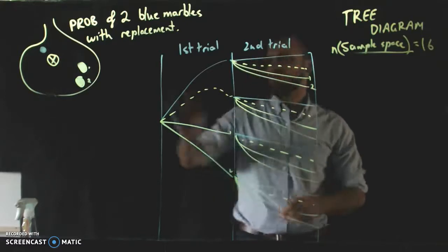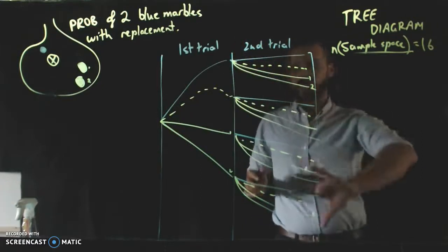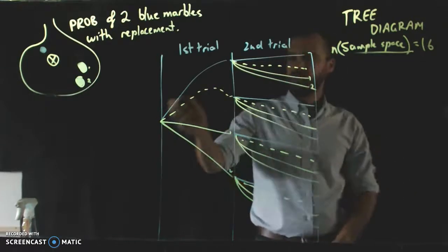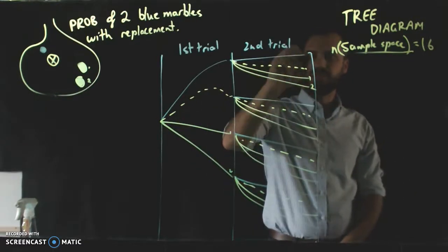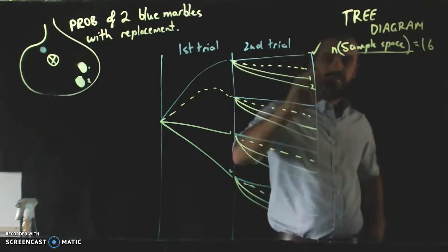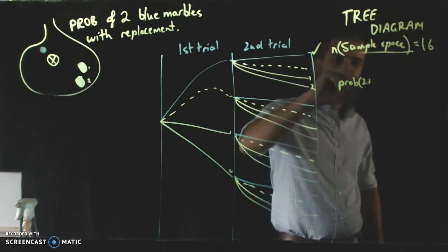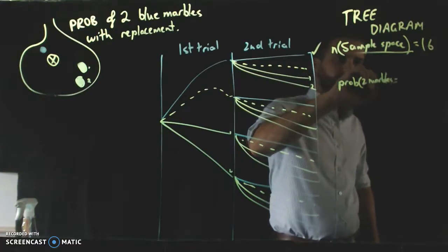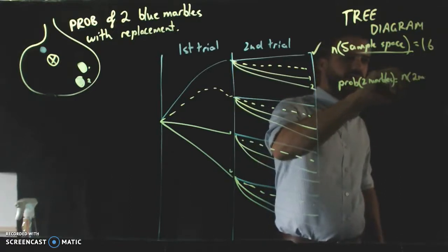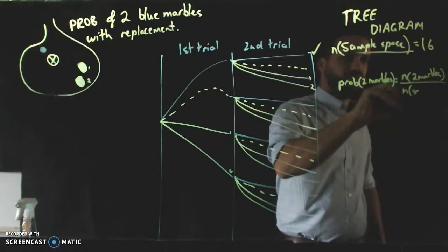Now, the question was, what is the probability of getting exactly two blue marbles? Now, that only happens on one of our branches. This branch here. Okay, so now we can actually do some maths here. So, the probability of two blue marbles is equal to the number of times two marbles happens divided by the size of the sample space.